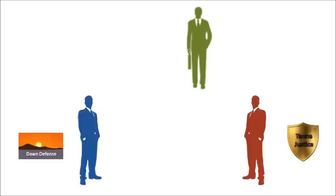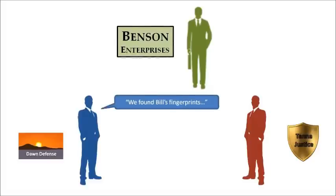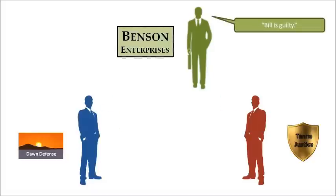Since both firms are large and well-established, they have a prior agreement about which firm to go to in such cases. Their chosen arbitrator — Benson Enterprises — is a firm that specialises in resolving such disagreements between security firms. Benson's examine the evidence presented by the two sides and listen to their arguments. After careful consideration, they conclude that Bill is guilty of mugging Alice. As agreed, both sides accept the decision.